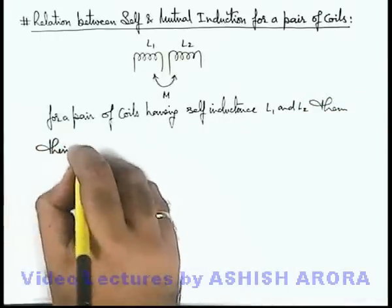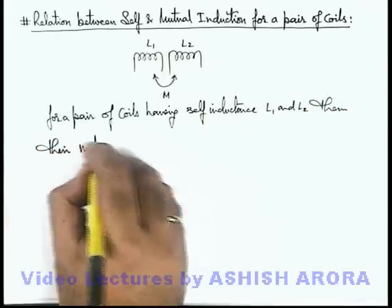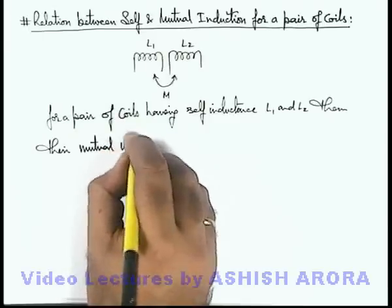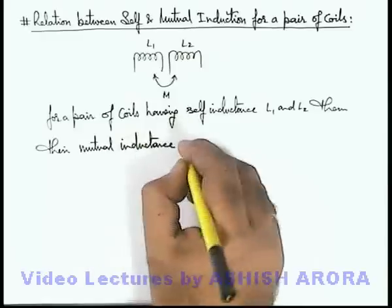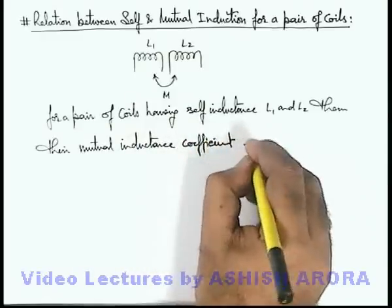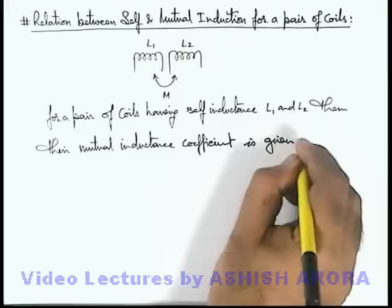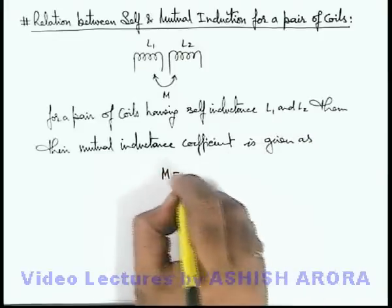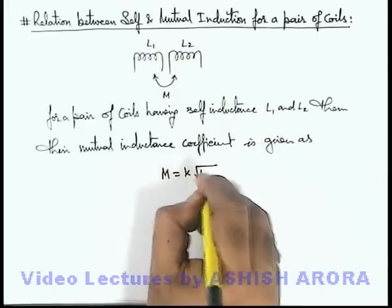Then their mutual inductance coefficient is given as M equals k times the square root of L1 L2.